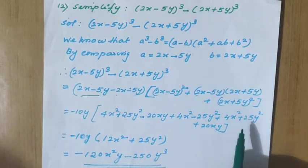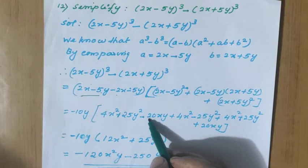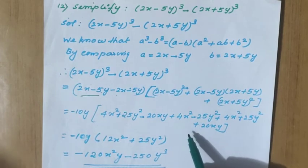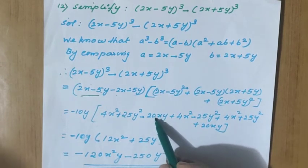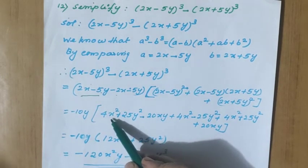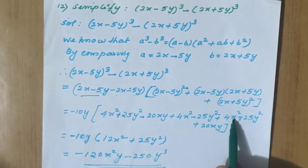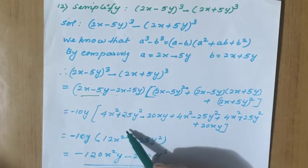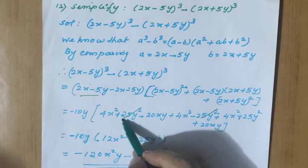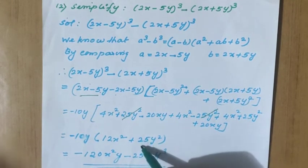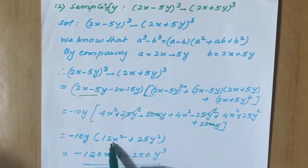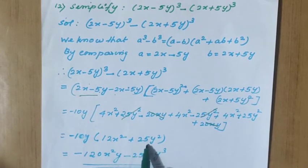Next, the last term is a plus b whole square. You know that the middle term sign only will change, so it is plus 20xy. If you compare all the terms in the bracket, minus 20xy plus 20xy will get cancelled. What about 4x square? Here 4x square, 4x square, and 4x square — that means 12x square. What about 25y square? 125y square is plus and minus 25y square is negative, so they cancel. 125y square is remaining.